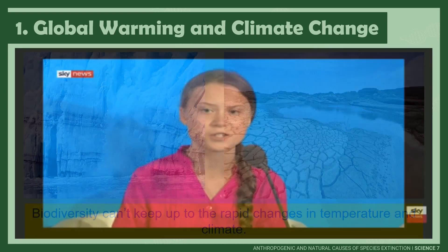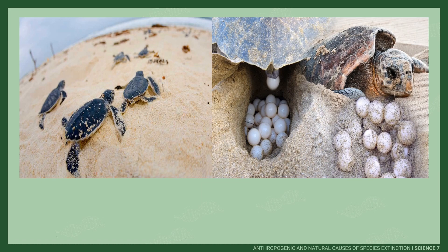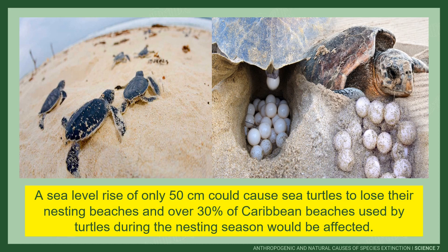According to Greta Thunberg, a Swedish climate activist, the efforts of the government by cutting carbon emissions in half in 10 years is not enough to stop the irreversible effects of climate change on the world. This statement led many to the realization that mass extinction might happen soon if things will not be controlled. For example, a rise in sea level of only 50 cm would cause sea turtles to lose their nesting beaches, and over 30% of the Caribbean beaches used by the turtles during the nesting season would be affected.